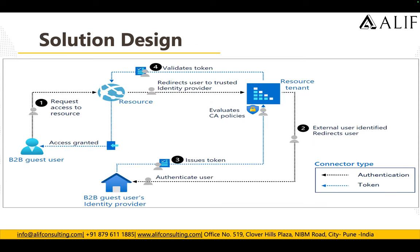This is how the solution looks. When B2B users access any resources, the request is sent to the resource tenant, which is the external user identity. From there the request is sent to the B2B guest identity provider, a token is generated, and then the conditional access policies are evaluated. After validating the token, the user is granted access to the B2B resources or services they want to access.